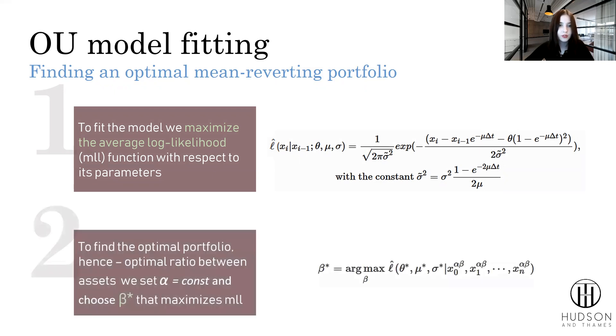Then we proceed to find the optimal portfolio and the optimal ratio between assets by setting alpha as a constant value and varying beta to choose such beta that maximizes our already maximum average log-likelihood function. Pretty easy, huh?